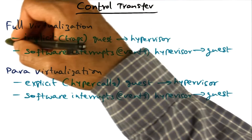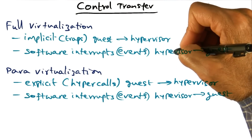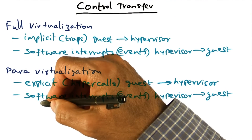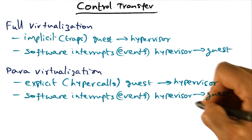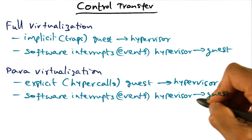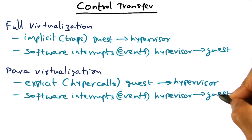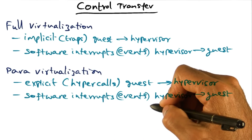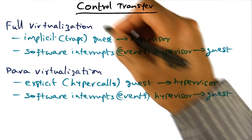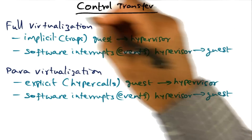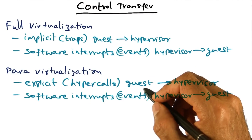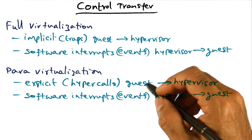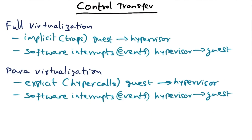Similar to the full virtualization case, in para-virtualization, in the other direction — that is, going from the hypervisor to the guest — it is done through software interrupts. So that's how control transfer is handled in both the fully virtualized and para-virtualized environments.